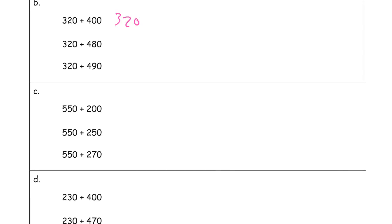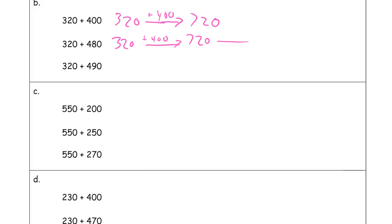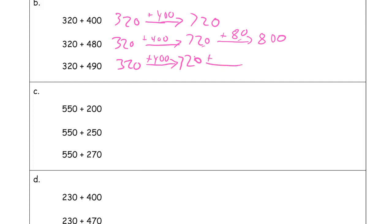320: we can add all 400 at once because we can just look at the hundreds digit and see 3 plus 4 is 720. For 320 plus 480: add the 400 first for 720, then add the 80. You'll notice 80 and 20 makes another 100, so that's 800. For 320 plus 490: add the 400 for 720, then add 80 first for 800, and then the 10 more to get 810. It's just adding tens and hundreds.